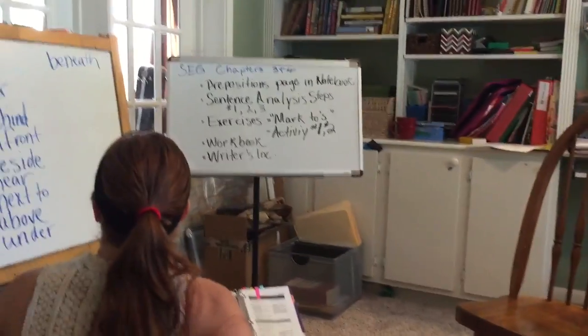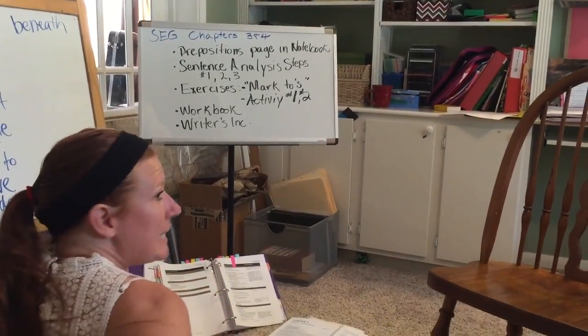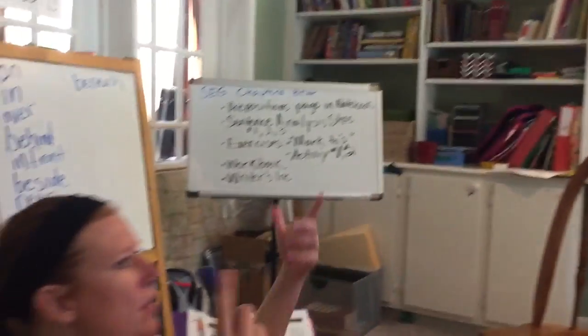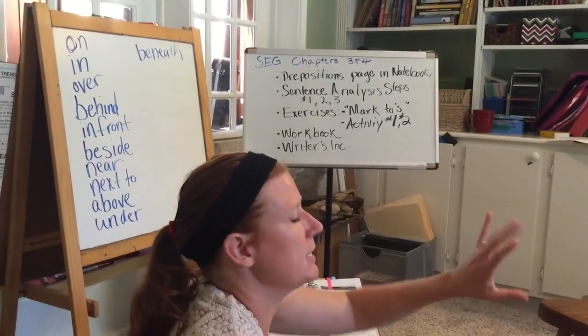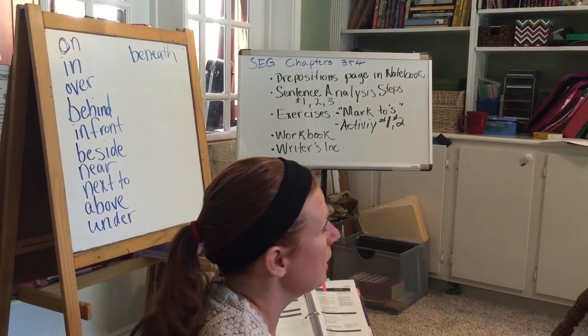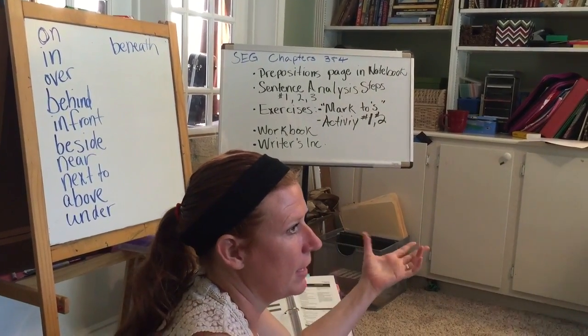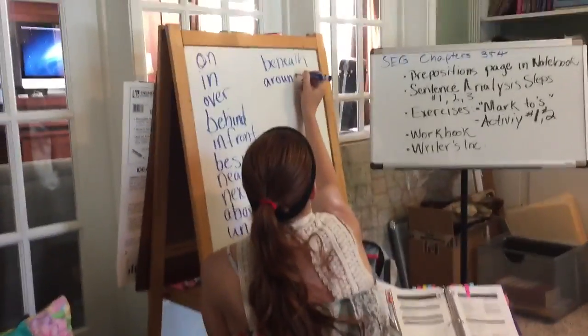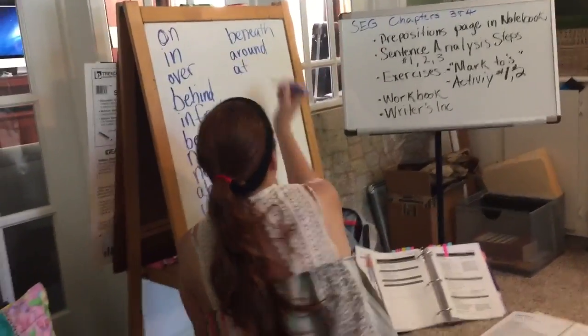The cat is next to Allison. Do you guys see how prepositions are words that tell a relationship between a noun and another word in the sentence? Most of the time it's another noun — two nouns in the sentence. So Jack can go to the store, he can walk around the store, at the store — 'around,' 'at.'